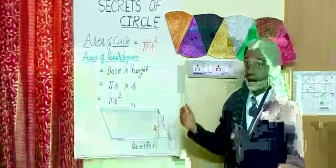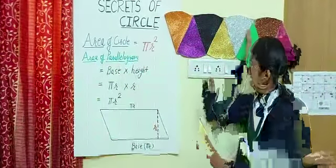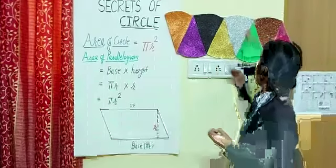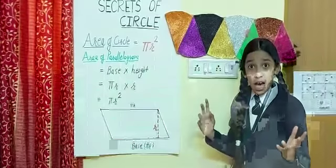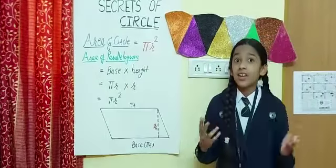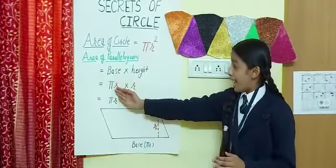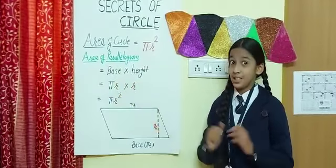The base is made up of 4 parts of the circle which is pi r and height is made up of radius of the circle which is r. The area of parallelogram is pi r into r which is equal to pi r square.